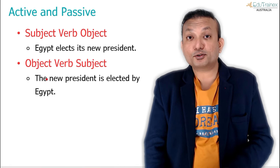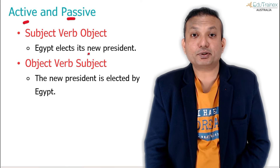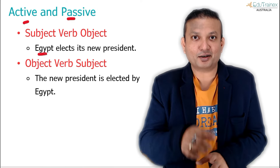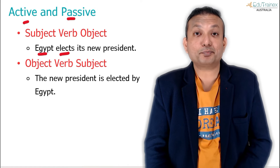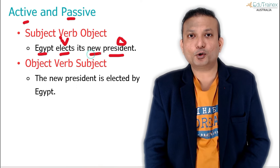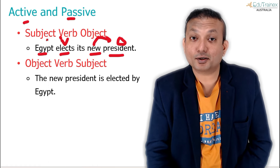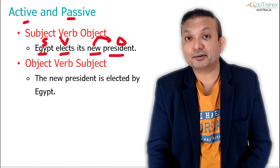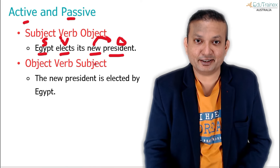Let's look at examples of both sentence types. Active voice: 'Egypt elects its new president.' Egypt is doing an action — subjects are always nouns or pronouns. Egypt is the subject, 'elects' is the verb, and 'the president' is the object. 'New' is describing the object — objects are also always nouns or pronouns. What describes the noun? An adjective. So 'new' is the adjective coming right before the object.